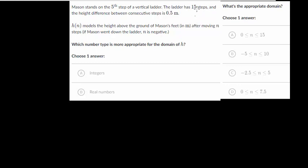The ladder has 15 steps, and the height difference between consecutive steps is 0.5. So h(n) models the height above the ground in meters after moving n steps. If Mason went down the ladder, n is negative.